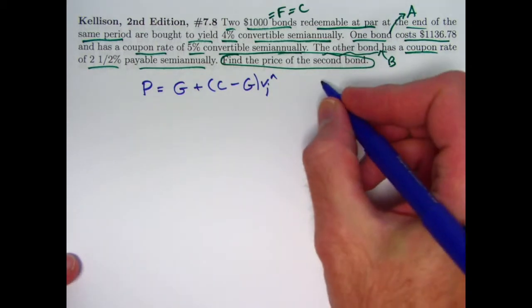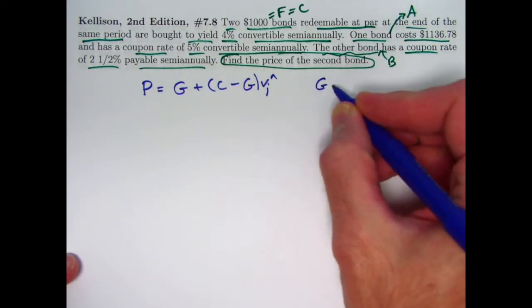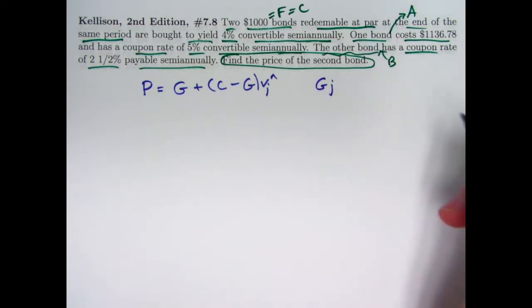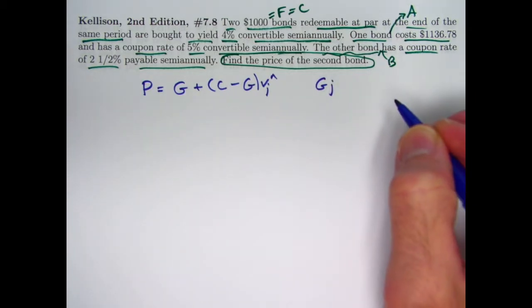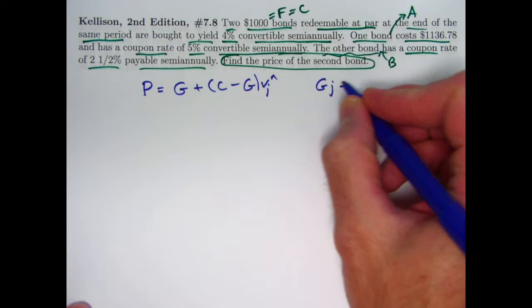What is capital G? It's defined in such a way that when you multiply that base amount times the semi-annual yield rate, the effective semi-annual yield rate J, you get the coupon amounts F times R.